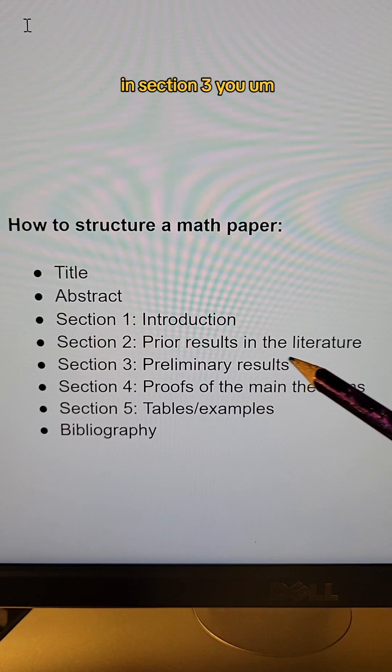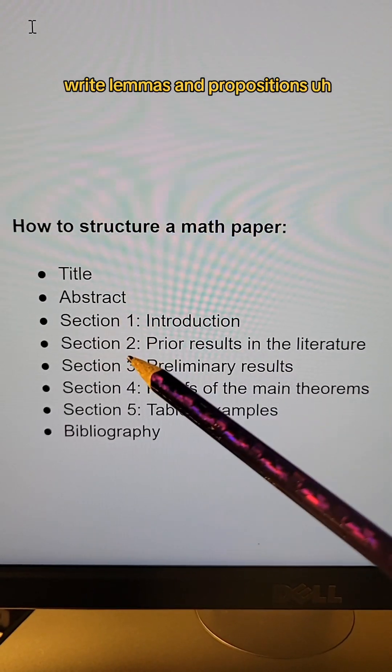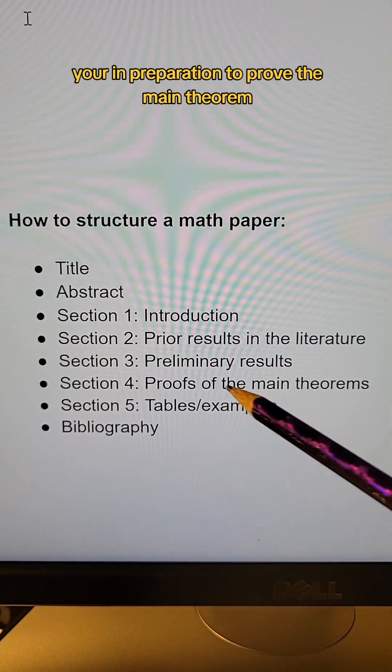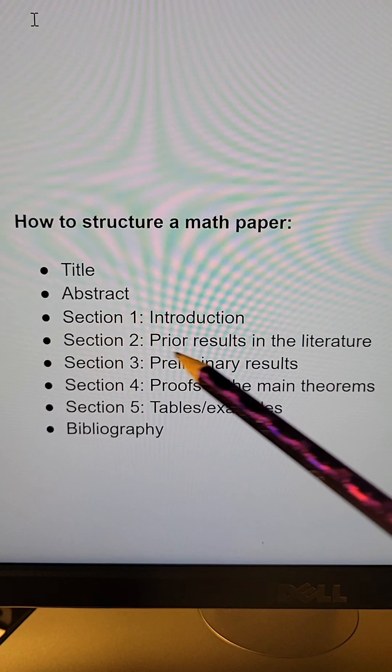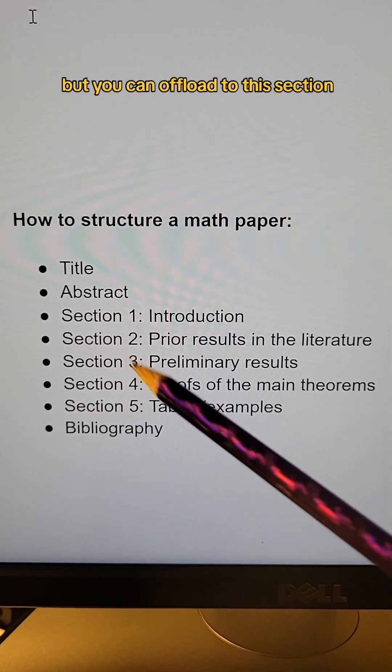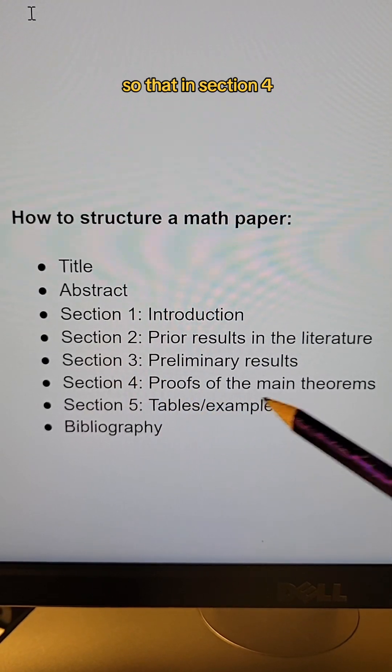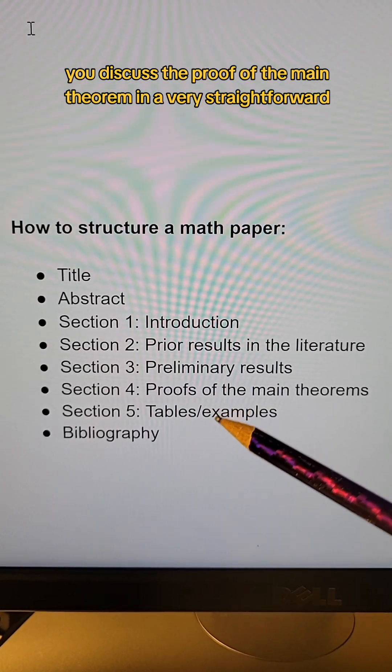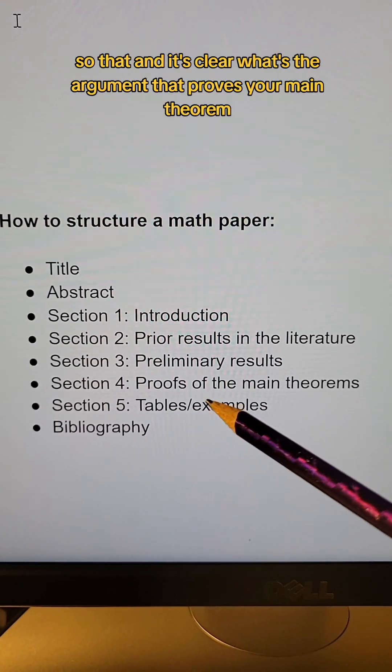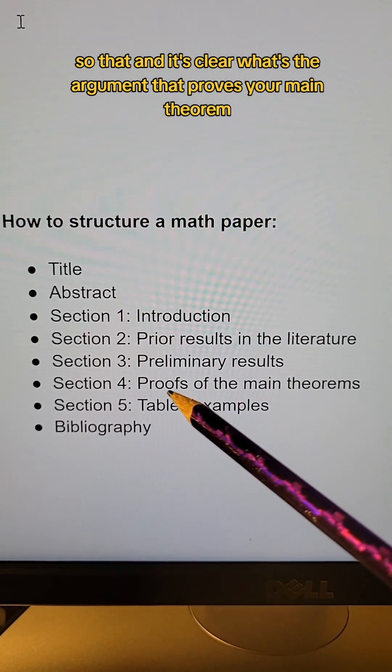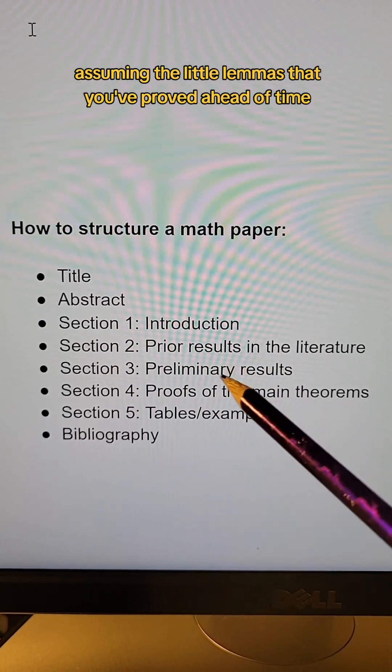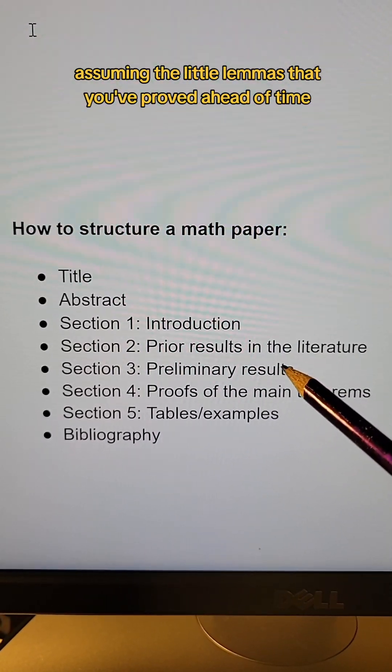In section three, you write lemmas and propositions, things that are sort of like you're in preparation to prove the main theorem, but you can offload to this section so that in section four, you discuss the proof of the main theorem in a very straightforward way so that it is clear what's the argument that proves your main theorem, assuming the little lemmas that you've proved ahead of time.